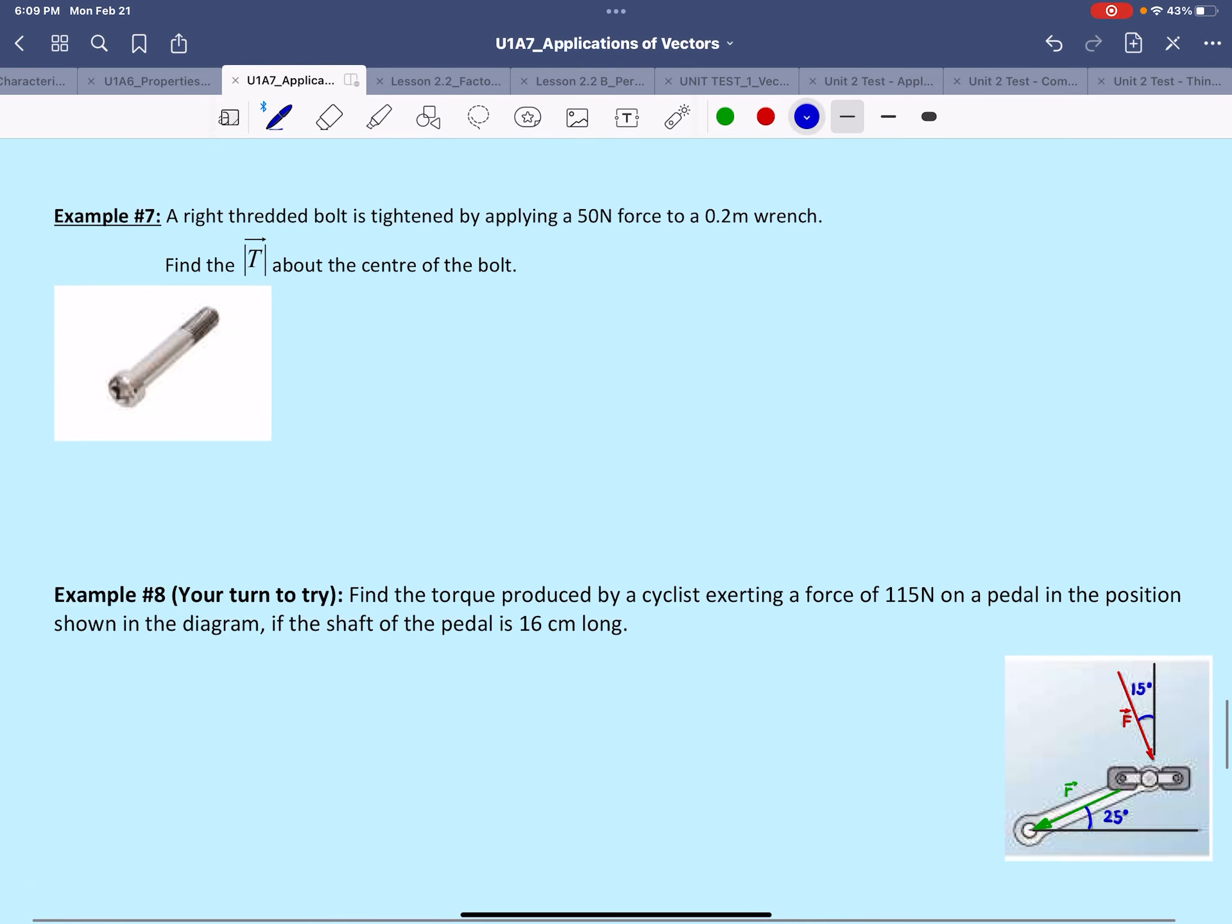Let's take a look at our first example. We have a right threaded bolt that is tightened by a 50 newton force to a 0.2 meter wrench.